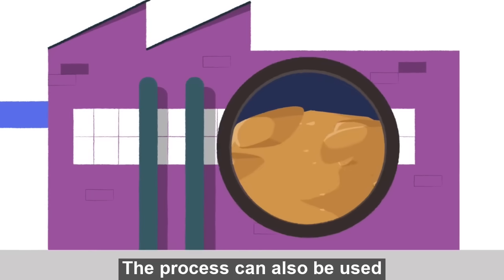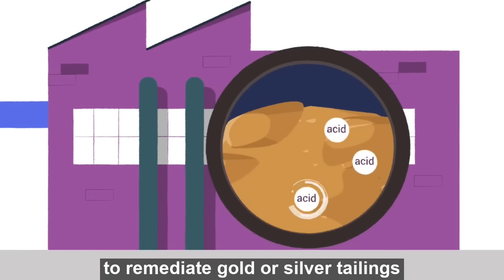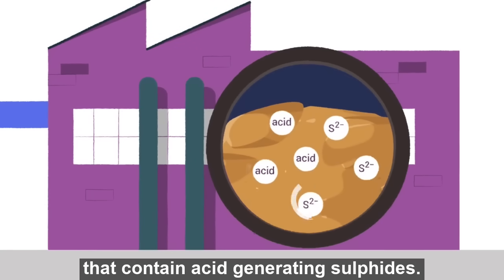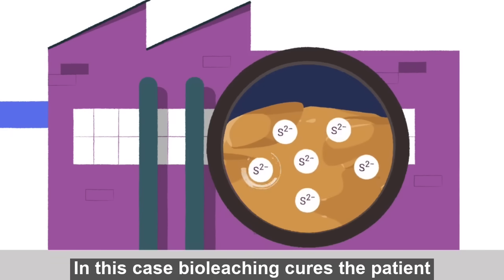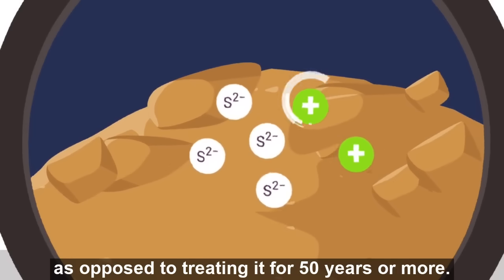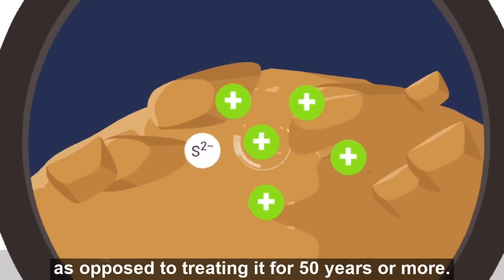The process can also be used to remediate gold or silver tailings that contain acid-generating sulfides. In this case, bio leaching cures the patient as opposed to treating it for 50 years or more.